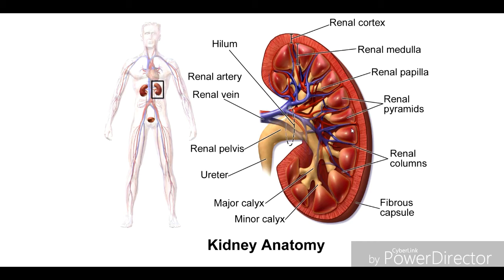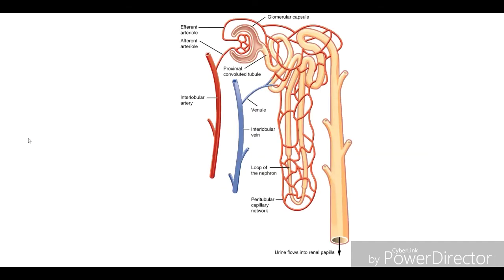The structural and functional unit of the kidney is the nephron. Nephrons are approximately 3 cm long with a diameter of 30 to 60 micrometers. The glomerulus is an extensive network of capillaries. The Bowman's capsule surrounds the glomerulus; it is a double-layered cup-like structure enclosing the glomerular capillary bunch.